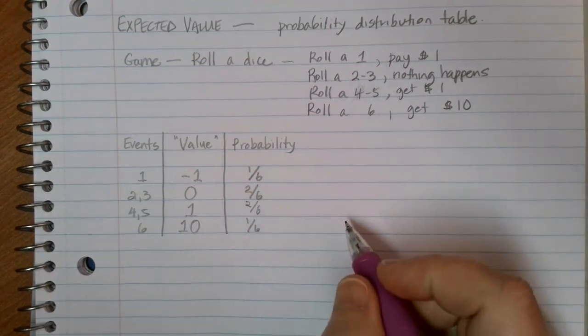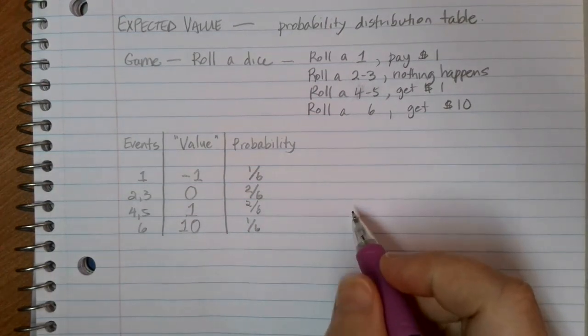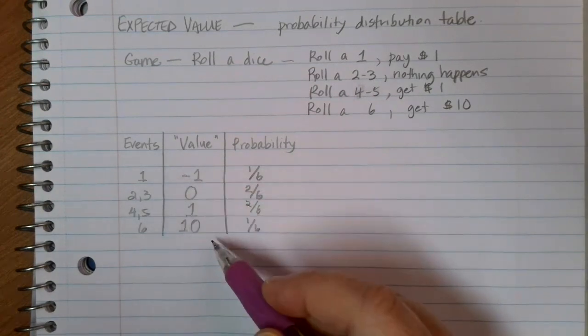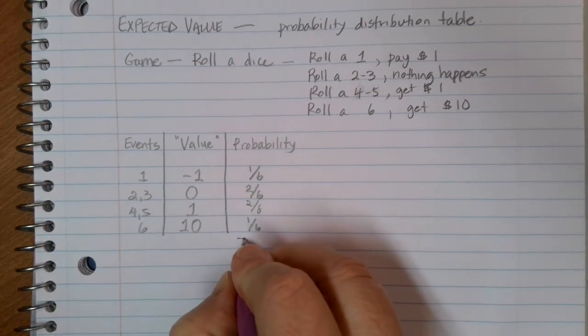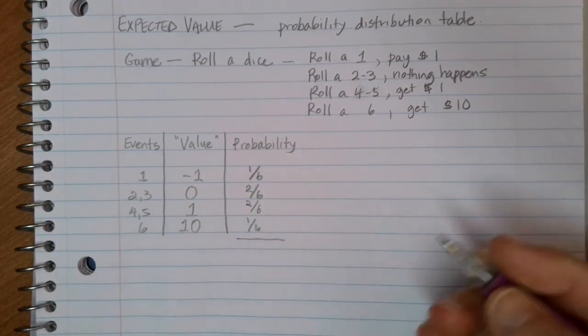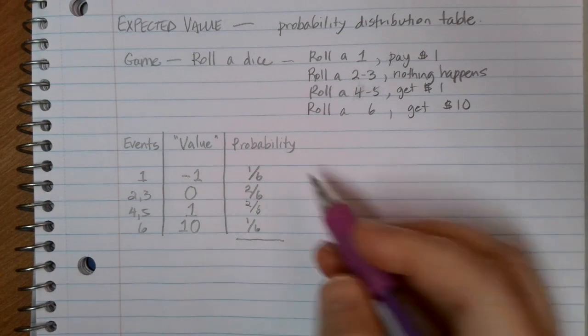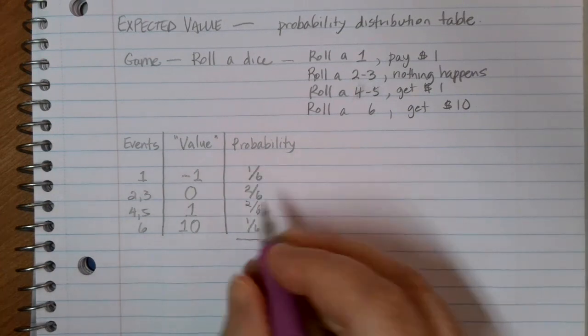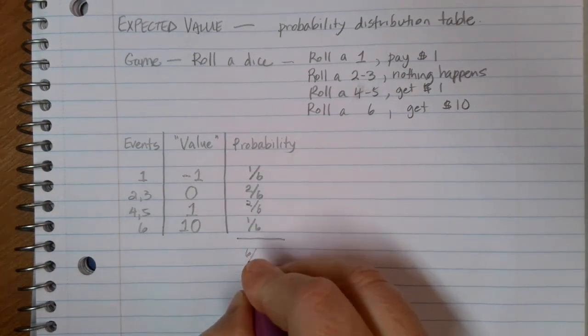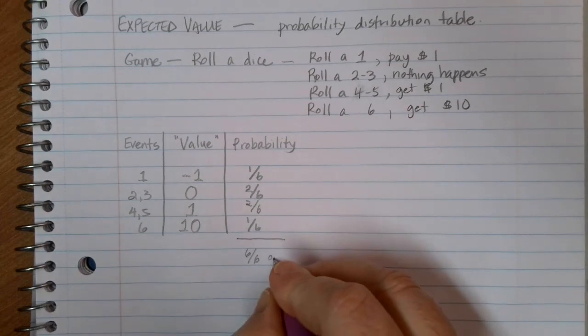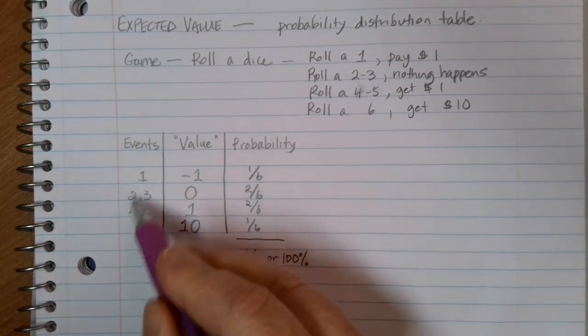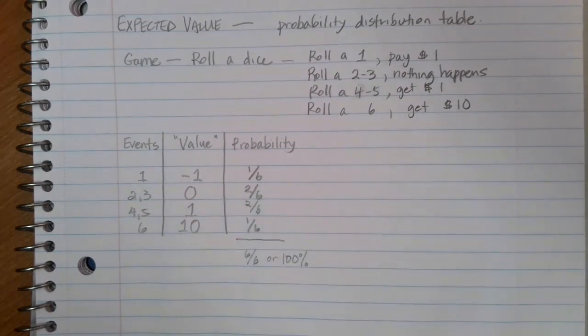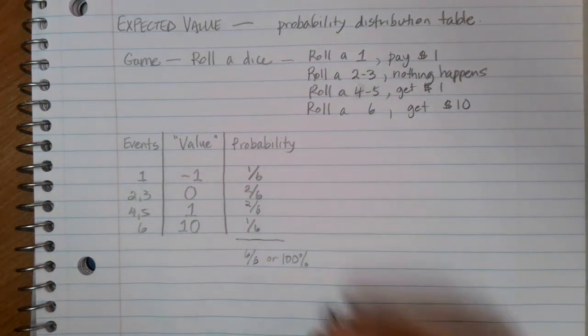This is an example of a probability distribution table. We have events with values associated with them, and we have the probabilities of each of those things happening. What's really critical when you create a probability distribution table and try to calculate expected value is that all of our probabilities have to add up to 100%. Which is the case in this. We have every one of our dice rolls accounted for and what we could get out of that.